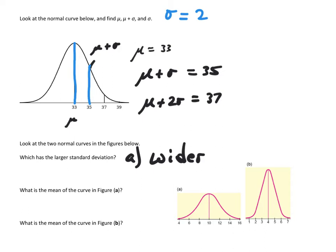What is the mean of the curve in figure A? What's the number labeled under the peak of graph A? It's 10. What's the mean of the curve in figure B? What's the value under the peak of that one? That's correct — it's 4.